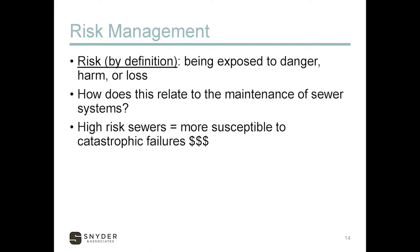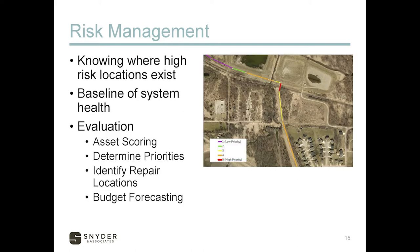Risk, by definition, is being exposed to danger, harm, or loss. A pipe failure is a loss, so we want to reduce our risk of having one. A pipe failure in a high-risk sewer is going to be accompanied by a large price tag. Emergency repairs are always the most expensive kind. Knowing where those high-risk locations exist is key, but to know that, you have to know your system. It's important to have a baseline of your system health — knowing where the good and bad areas are.